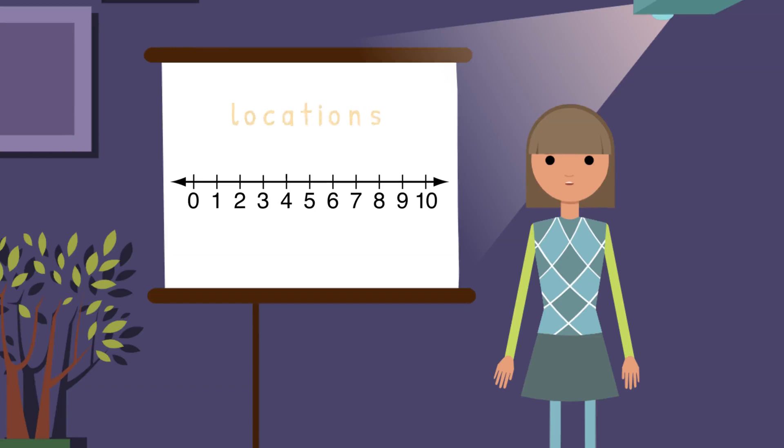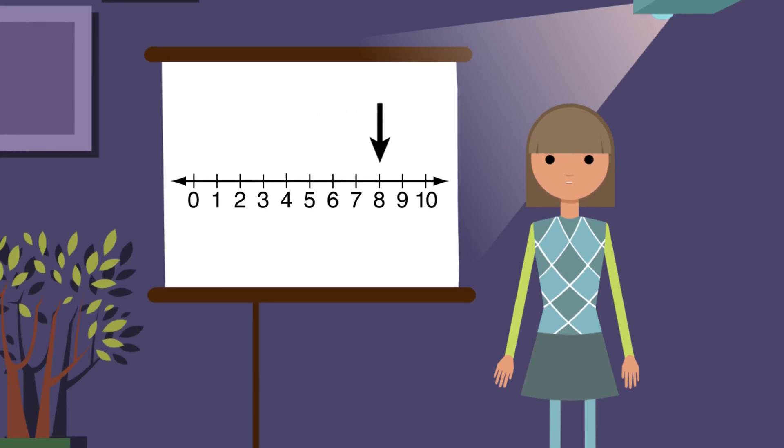Now let's take a closer look at locations on the number line. Find the number 7. We can see 8 comes after 7 on the number line. So 8 is larger than 7. This number line counts up by 1's. So 8 is 1 more than 7.